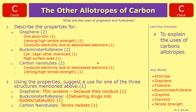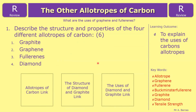That about sums up this video. The review question is: describe the structure and properties of the four different allotropes of carbon — that's graphite, graphene, fullerenes, and diamond. You might need a bit of a recap, so you can go back to the allotropes of carbon video, the structure of diamond and graphite video, or the uses of diamond and graphite video.